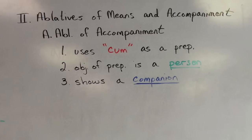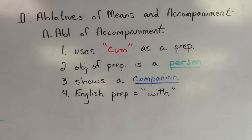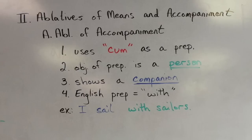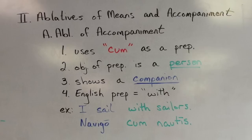It indicates a companion, hence accompaniment. It's equivalent to using the English word 'with', also with people. For example, if we said 'I sail with sailors,' the sailors are our companion, and so 'I sail' would be navigo, and 'with' would translate to cum nautis.